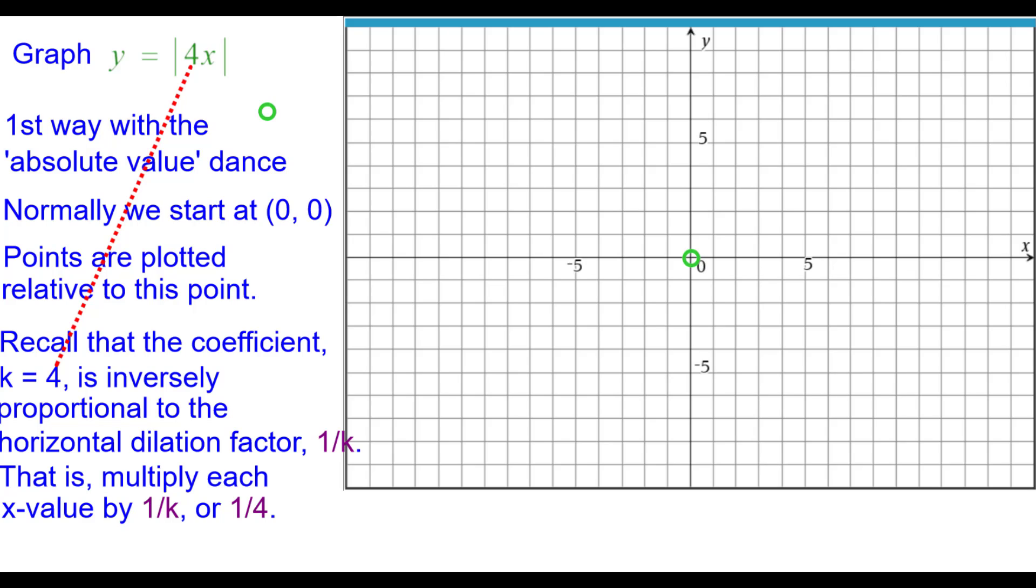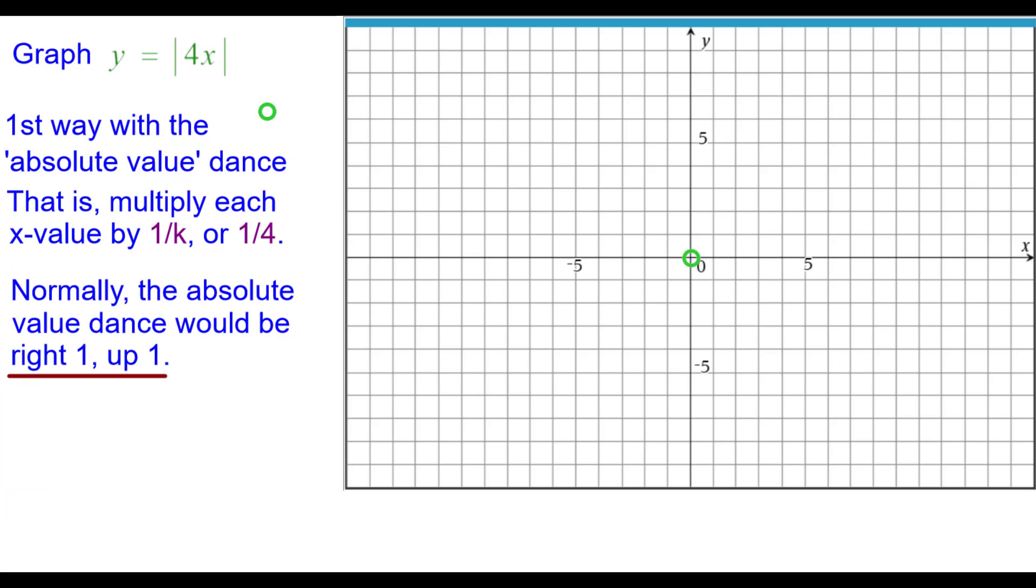So we are going to multiply each x value by the reciprocal of 4, 1 fourth. Normally the absolute value dance would be right 1 up 1 but for this one it is right 1 fourth up 1. A fourth times 1 is a fourth and we keep the y value the same. So right 1 fourth up 1 is plotted.